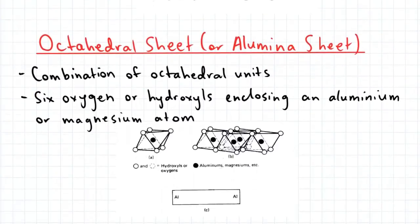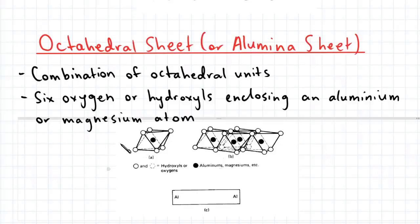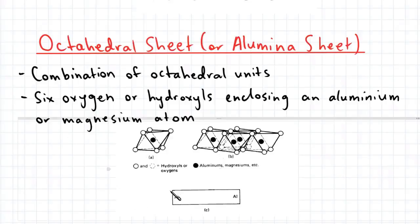The second fundamental crystal sheet is the octahedral sheet, also known as the alumina sheet. The alumina sheet is made up of octahedral units, each unit consisting of an aluminium or magnesium atom surrounded by six oxygens or hydroxyls. Schematically, the octahedral sheet is represented by a rectangle.